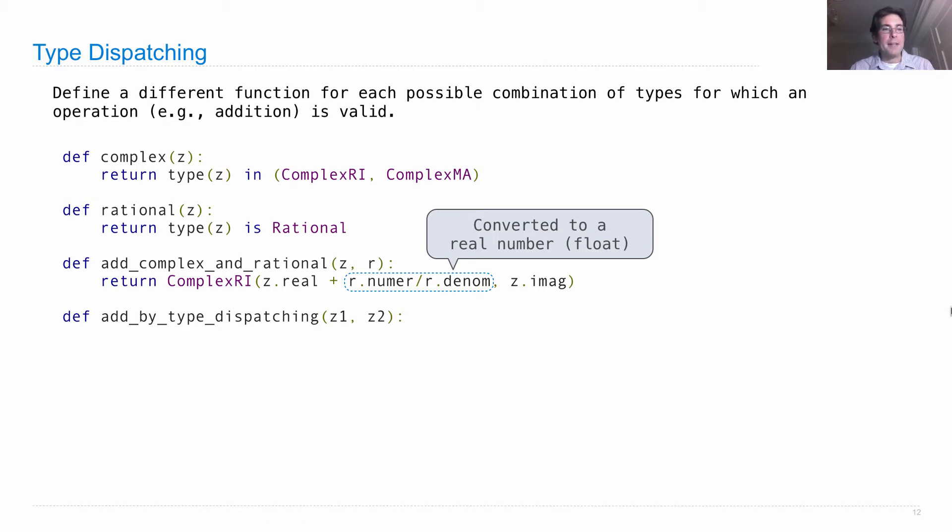Pretty straightforward idea. We're going to add z1 and z2, which may be complex or rational, by just testing what they are and doing the right thing in each case.